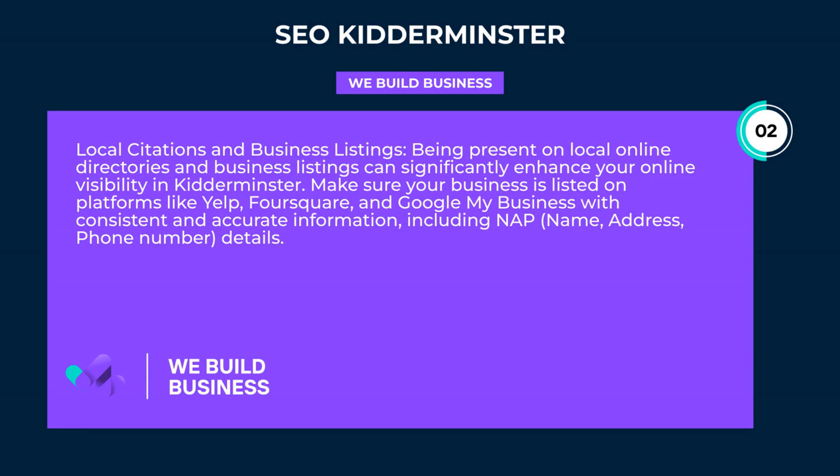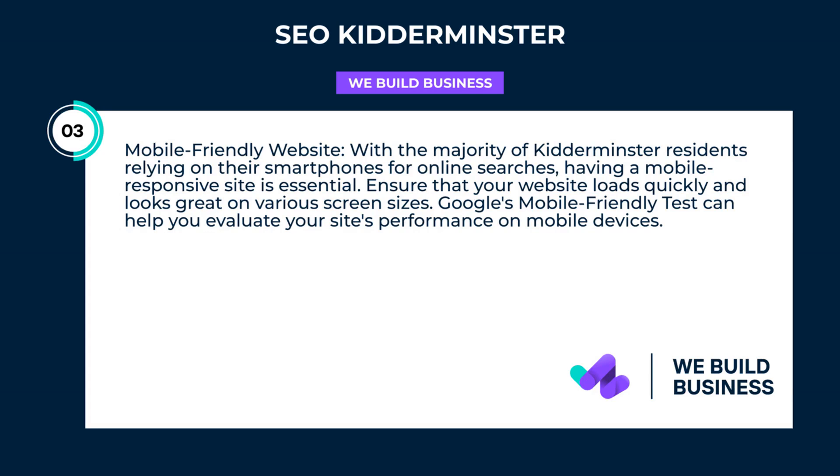Local citations and business listings. Being present on local online directories and business listings can significantly enhance your online visibility in Kidderminster. Make sure your business is listed on platforms like Yelp, Foursquare, and Google My Business with consistent and accurate information, including NAP — name, address, and phone number details.